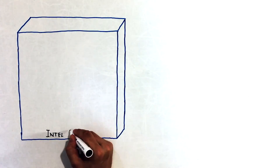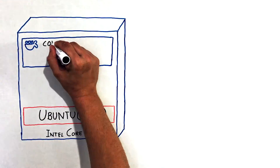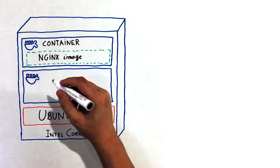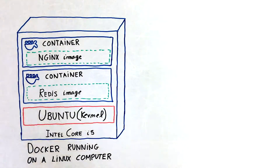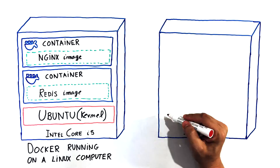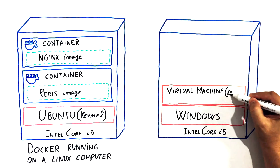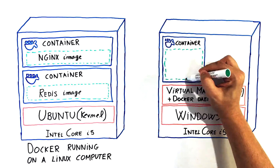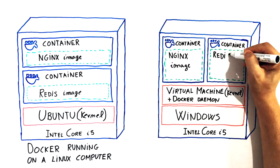Before continuing, let me explain an interesting thing regarding using Docker on macOS or Windows. As explained in the previous episode, Docker containers need a Linux kernel to run. So if you are using macOS or Windows, Docker will set up a virtual machine running a Linux kernel and a Docker daemon inside.